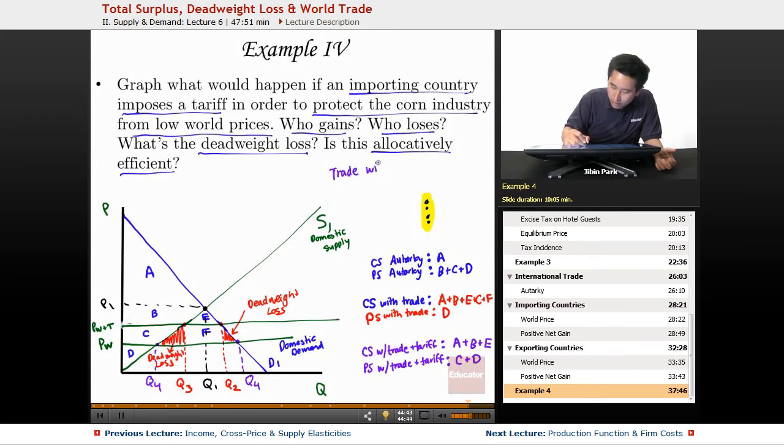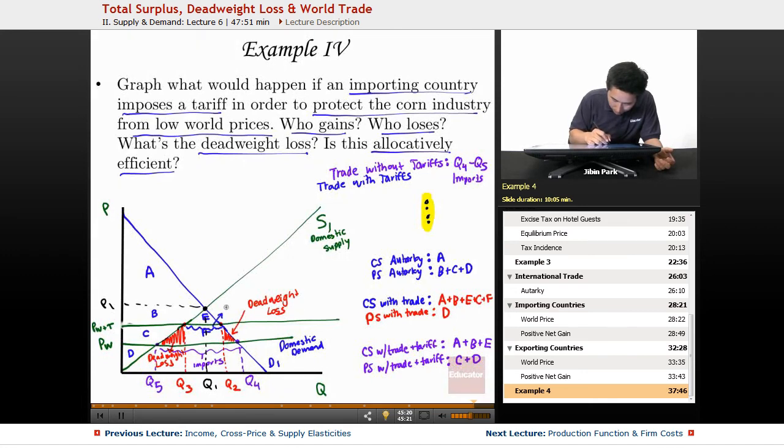So trade without tariff is this area here, Q4 minus Q5, so this is the amount of imports. Trade with tariffs, now you have Q2 minus Q3. So this area or this quantity is the new amount of trade. So this area between Q5 and Q3, you lose that entire amount of trade with the tariff. And you also lose between Q2 and Q4. So tariffs are definitely not allocatively efficient.